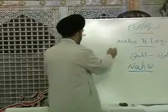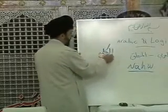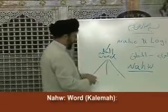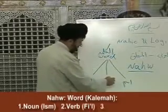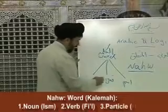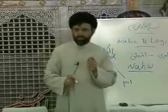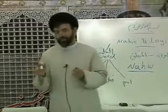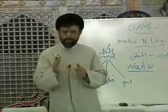We say kalima in Arabic, or 'word,' divides into three parts or three categories. One category is ism — noun. One category is fi'al — verb. One category is harf — particle. So this is the first thing that we understand and study in nahw, in grammar, in Arabic: fi'al, ism, and harf — verb, noun, and particle.